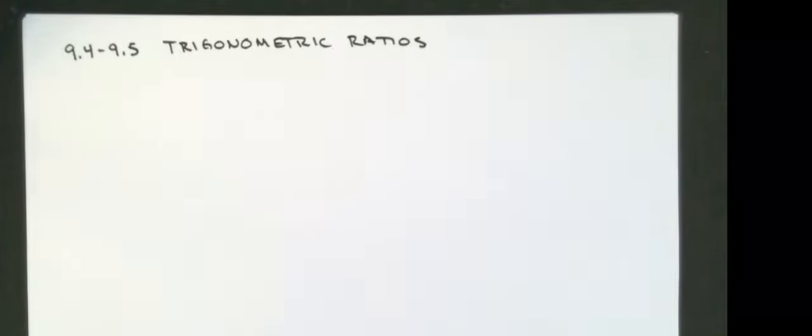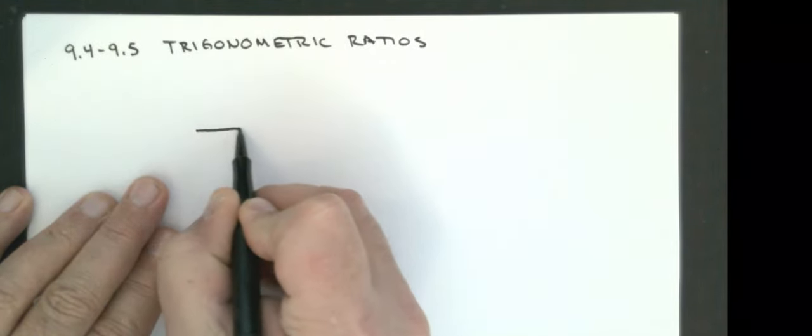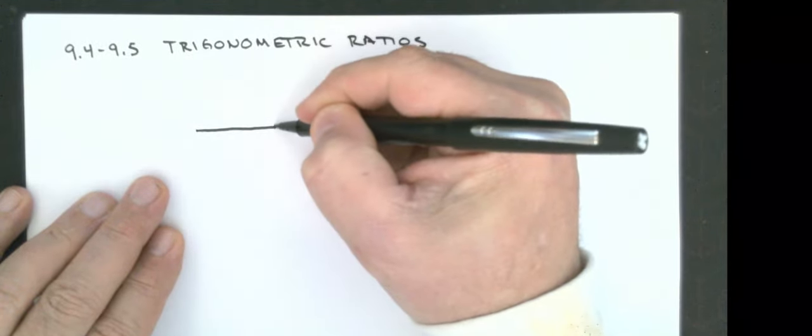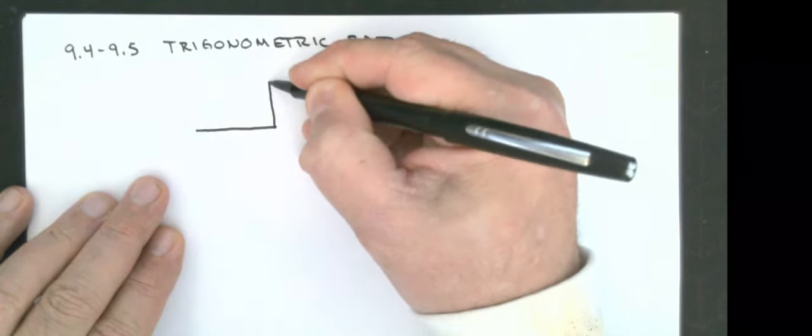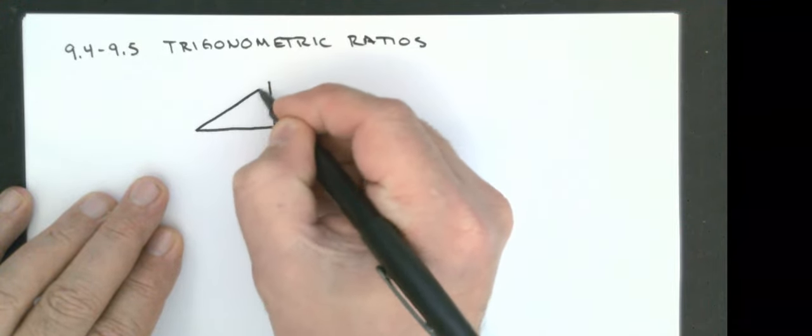I'm doing the next two sections together because it helps to learn what the ratios are for all three trig functions before you do any work on any of them. Our trig ratios for this class are ratios of side lengths of a right triangle.